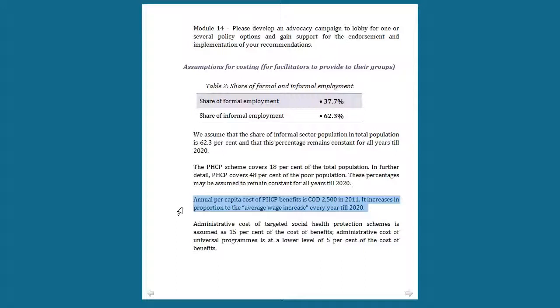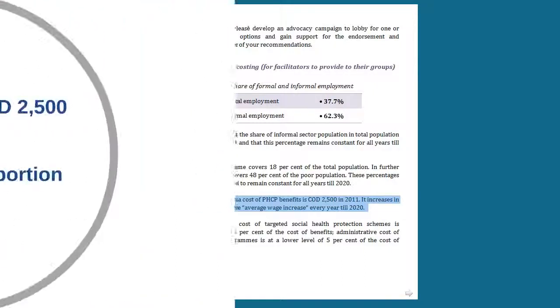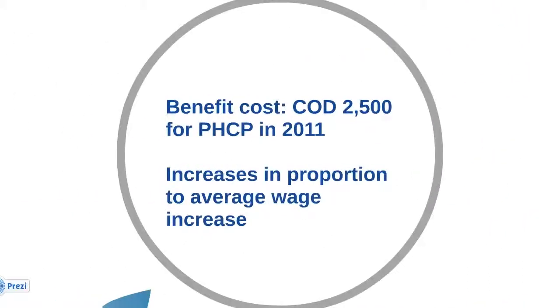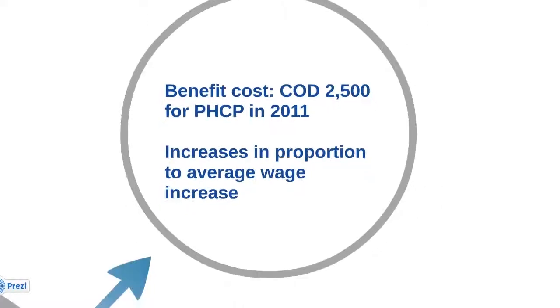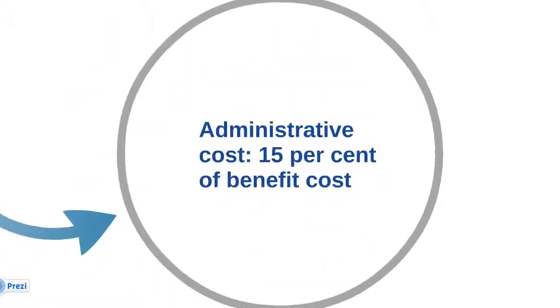Thus, the cost of providing health care services is indexed on average wage increase in the country. The administrative cost is assumed as 15% of the cost of benefits, which is similar to the administrative cost for other targeted schemes in the country.